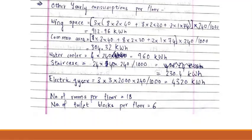We now calculate the other yearly consumption per floor from the power rating of the appliances for the different sections of the floor: wing space, common area, water cooler, staircase. We also calculate the energy requirement of the geyser for the electric geyser.